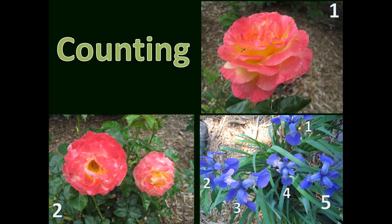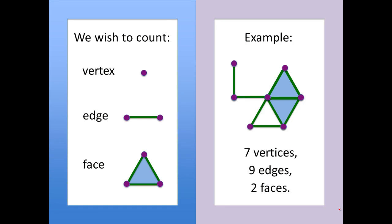Today we will start with counting. What we are interested in counting are vertices, edges, and faces. A vertex is just a zero-dimensional point. An edge is a one-dimensional line segment connecting two vertices. If three edges form a triangle, we can fill in that triangle with a two-dimensional surface, which we will call a face. One can also have more general faces like square faces, but for this lecture and the next we will stick to triangles.